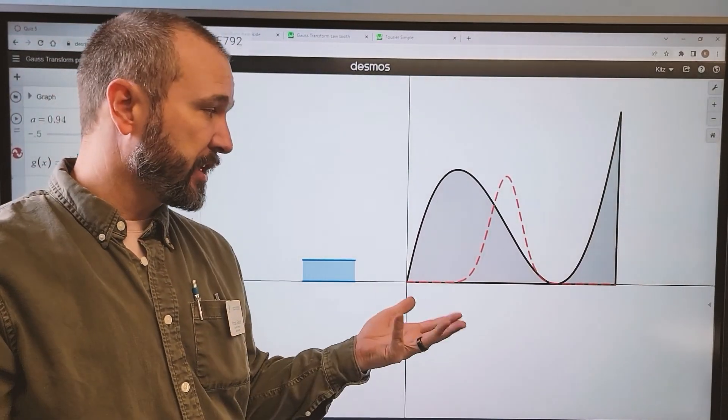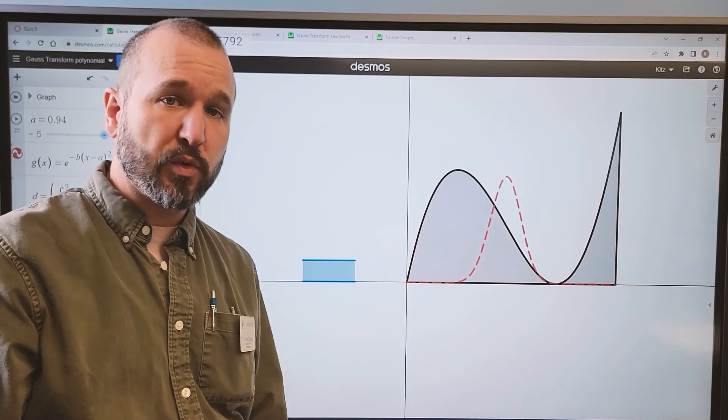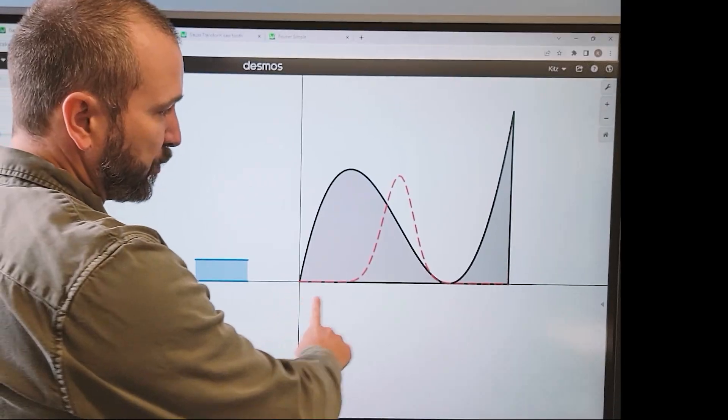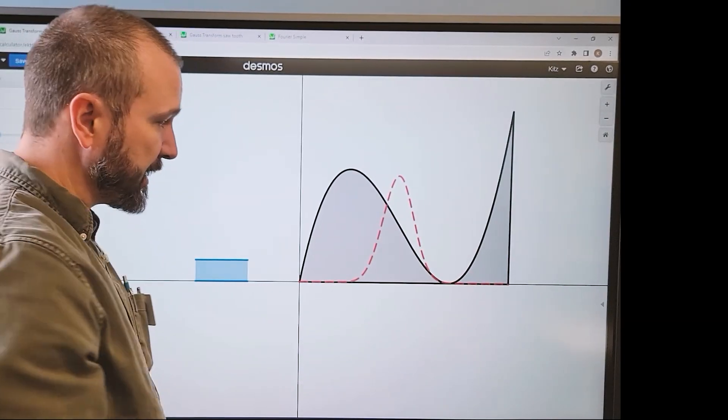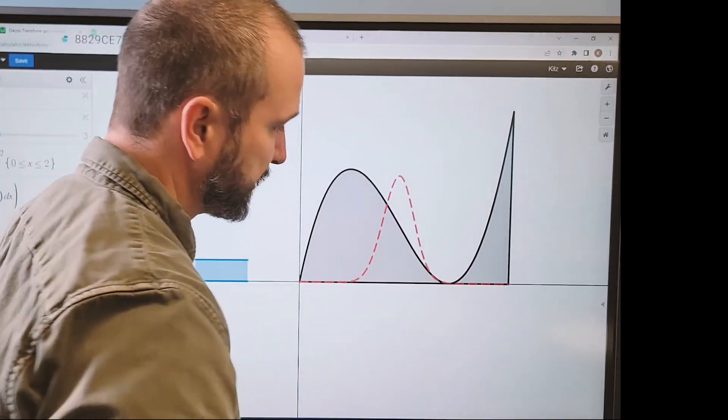This graph here is a representation of the Weierstrass transform, or the Gauss-Weierstrass transform. The red curve is the density, and the gray curve is the metal plate.